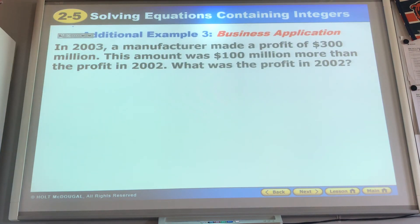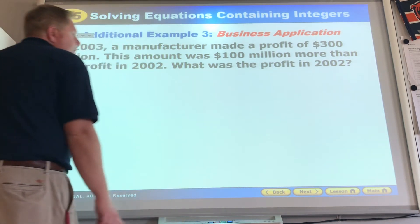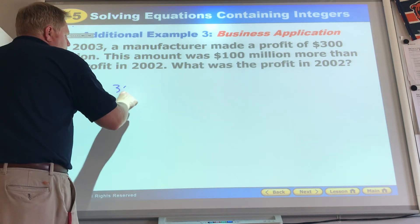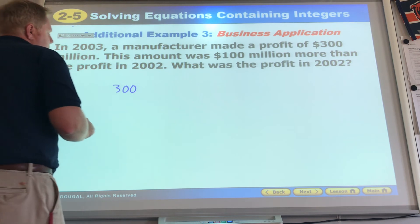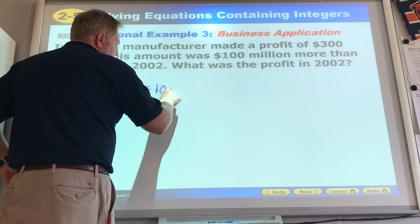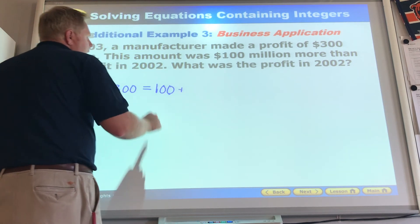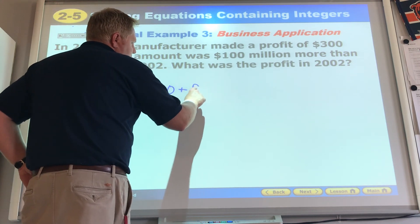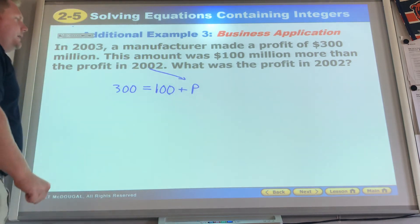So, they put that negative 50 back in. 4 times negative 50. Negative 200. They do check out and we're good and dandy. Now, of course, we've got to make one. The harder part about this is probably making up the equation. I'm not going to be a stickler about the equation since we can't work through them together. But in 2003, a manufacturer made a profit of $300 million. This amount was $100 million more than the profit in 2002. What was the profit in 2002?